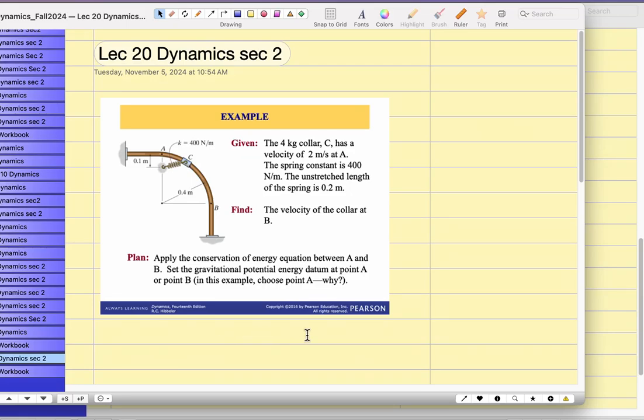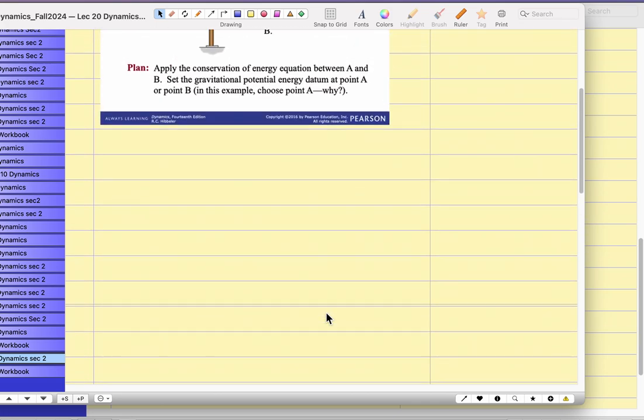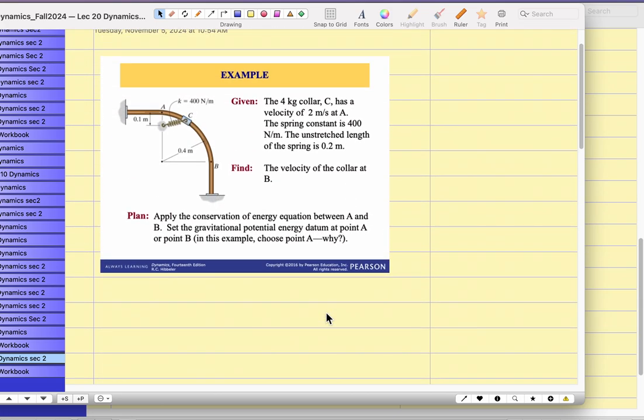The question is, the 4 kilogram collar C has a velocity of 2 meters per second at position A. So this is my position A, and for my convenience, I'm going to mark this as my datum line. And when it comes to position B, when it comes over here, you have to find the velocity at position B.